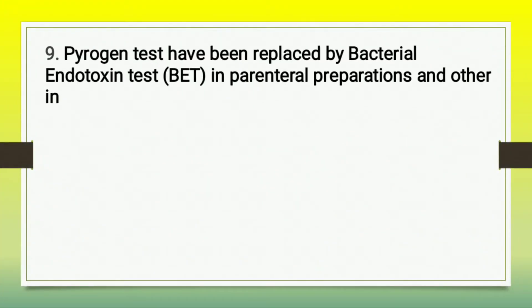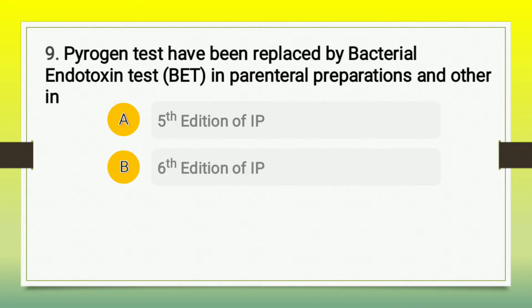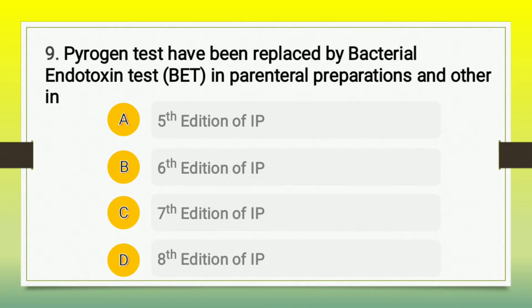Moving to the next question: the pyrogen test has been replaced by the bacterial endotoxin test (BET) in parenteral preparations in — A) fifth edition of IP, B) sixth edition of IP, C) seventh edition of IP, or D) eighth edition of IP. The correct answer is the eighth edition of IP, which is the most recent IP of 2018.